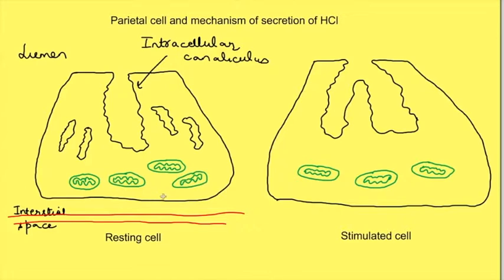Here two diagrams are shown where in diagram A, the parietal cell is in resting state and in diagram B, the parietal cell is in a stimulated state. In the resting state, inside the cells are present some stored membranes known as tubulo vesicles.